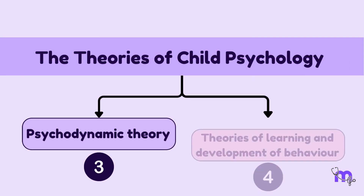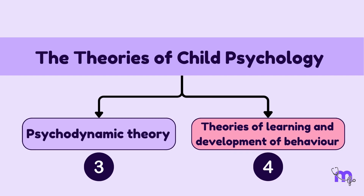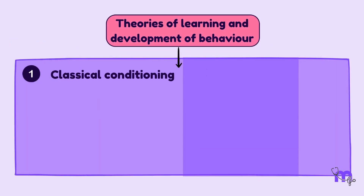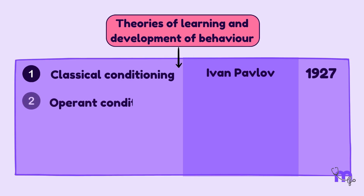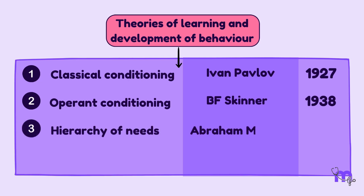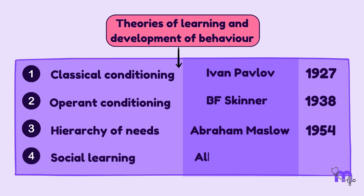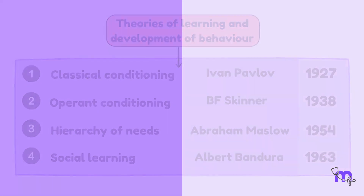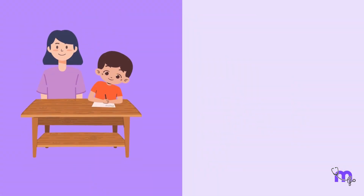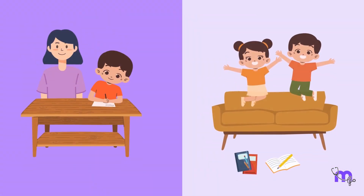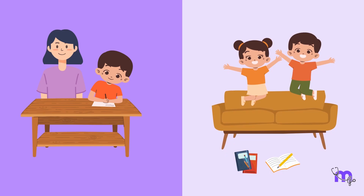Next, we have the four theories of learning and development of behavior. Classical Conditioning by Ivan Pavlov (1927), Operant Conditioning by B.F. Skinner (1938), Hierarchy of Needs by Abraham Maslow (1954), and Social Learning Theory by Albert Bandura (1963). Behavioral learning theories provide insights into how behaviors are acquired and modified through environmental interactions.